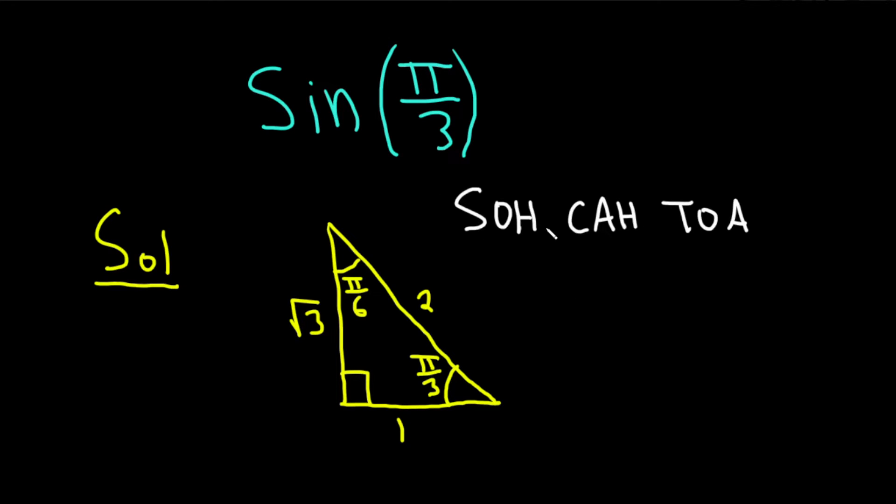In our case, we have sine, so it's opposite over hypotenuse. The sine of pi over 3 is equal to opposite over hypotenuse. I'll just write OPP over HYP to make the point.